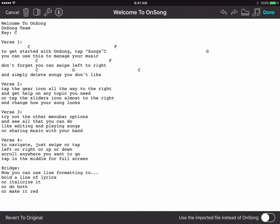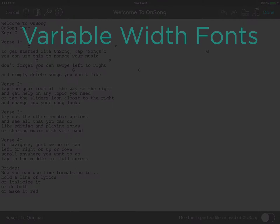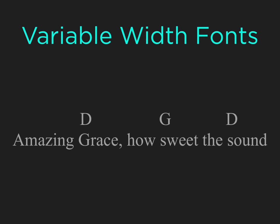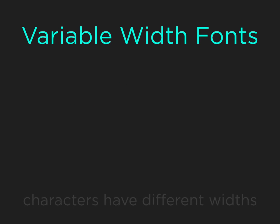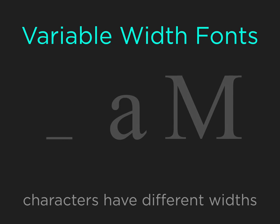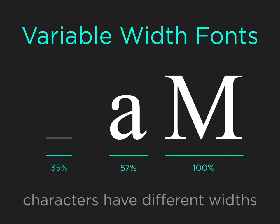The next thing we'll notice is that our chords are not aligned properly. This is because our original document used a variable width font, which made us use lots of spaces to align the chords above lyrics. The conversion process just converts the Word file to text and keeps all those spaces.